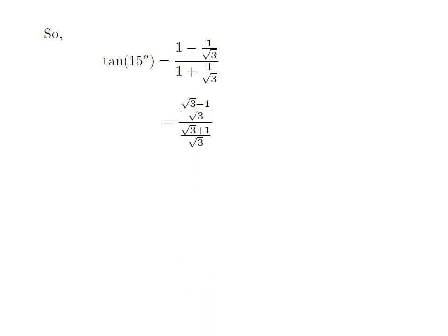Let us simplify the numerator expression. Here, square root of 3 will be in the denominator. So, in the numerator it will be 1 into square root of 3 minus 1, which is equal to square root of 3 minus 1. Same way, in the denominator it is square root of 3 plus 1, divided by square root of 3.